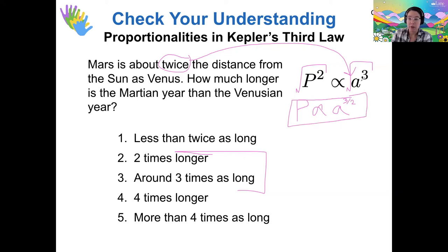So if you take a factor of two and cube it, you get eight, and then take a square root, you get something less than three. So in that case, that would make our answer choice number three, because it would be about three times as long of a period.